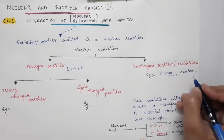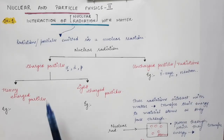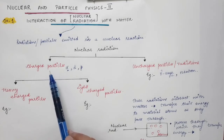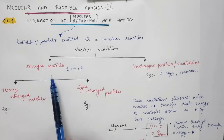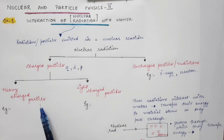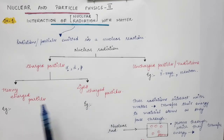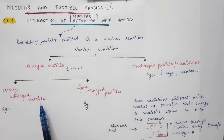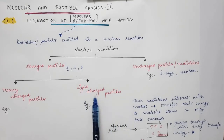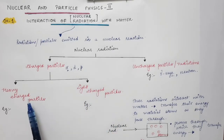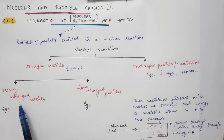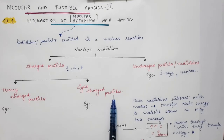The charged particles are divided into two types: heavy charged particles and light charged particles. This division is based on their mass. Heavy charged particles have a larger mass compared to light charged particles. 'Light' here does not mean lightly charged — it means their mass is very small compared to the heavy charged particles.